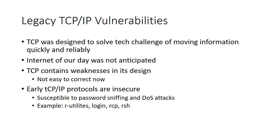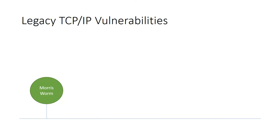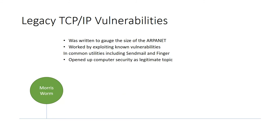Looking back, one of the first worms to propagate the internet was in 1988 — the Morris Worm. According to its creator, they weren't trying to cause damage; they were trying to figure out the size of ARPANET. It exploited vulnerabilities in Sendmail, which is software used for routing email, as well as a tool called Finger, which showed what users were logged on to network devices.